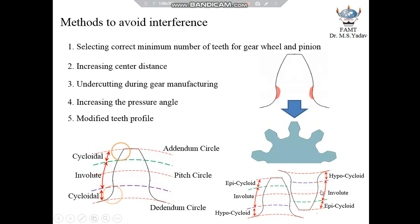At the middle portion, the involute comes in contact with the involute profile. Even though interference will be prevented with this method, the gear tooth profile becomes more complex than the cycloidal profile and is even more difficult to manufacture. These are the five commonly used methods to avoid interference in case of involute gears.